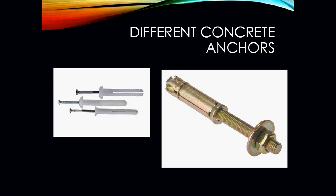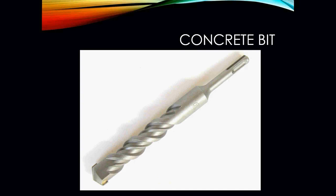There are two different types of concrete anchors: your hammer-in type and your drill-in type. The hammer-in type are most commonly used in concrete, while the drill-in type are commonly found when working with sheetrock and similar materials. In order to get your anchors into concrete, you're going to need to use a special bit commonly called a concrete bit, and you're also going to need to use a hammer drill.